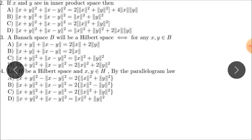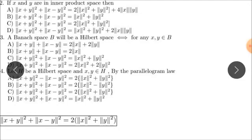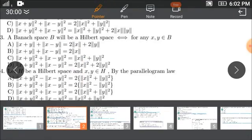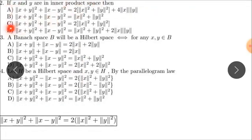In Hilbert space, the parallelogram law applies. It's called a Hilbert space, and that's why we can define and identify a polarization identity. The parallelogram law is a key property — this is the parallelogram identity. It's a classic question: the parallelogram law is satisfied.